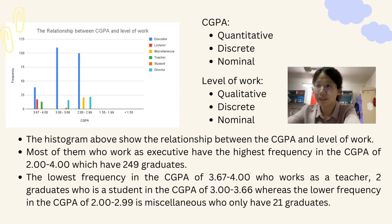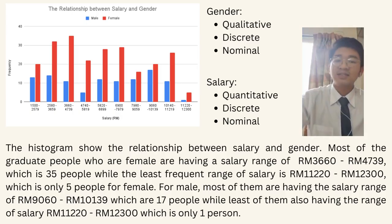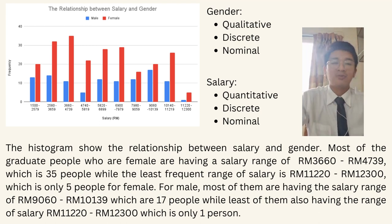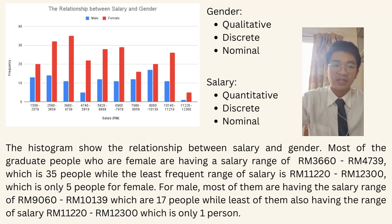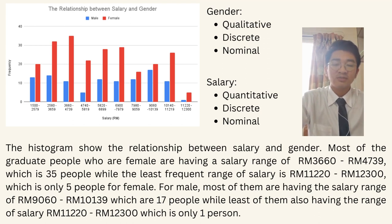Our third objective is to analyze and compare salary between gender, program, ethnic, working sector, and type or level of work. This histogram shows the relationship between salary and gender. Gender is qualitative, discrete, and nominal data, while salary is quantitative, discrete, and ratio data. From the diagram, most graduates have a salary range of RM2,580 to RM3,659 and also RM3,660 to RM4,739, which are 46 people each, while the least frequent salary range is RM11,220 to RM12,300, which is only 6 people.